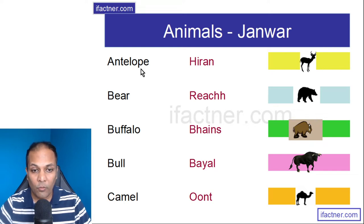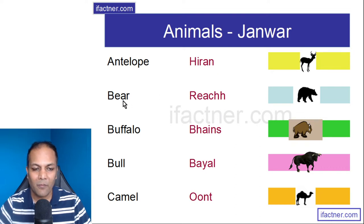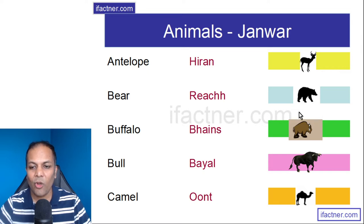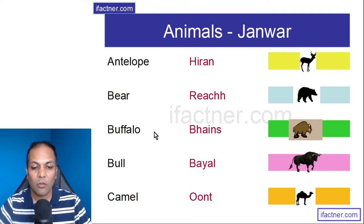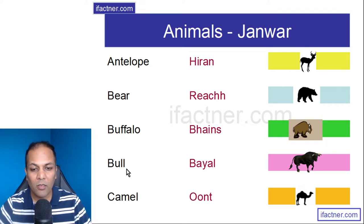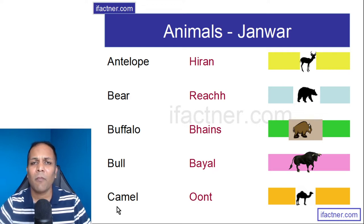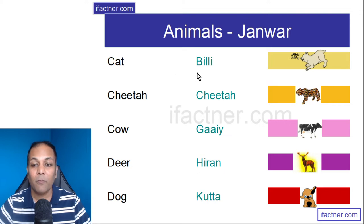Antelope is Hiran. Bear is Reach, or Bhaaloo. Buffalo is Bhains. Bull is Bail. Camel is Oont. Cat is Billi.